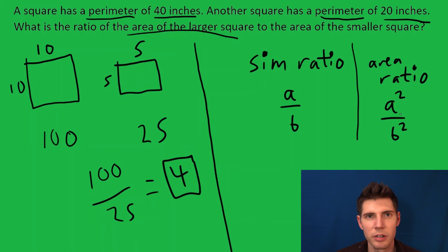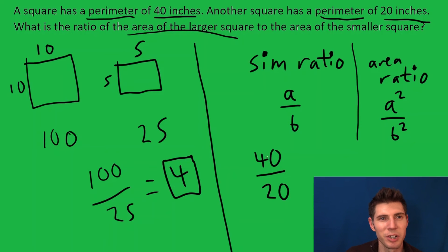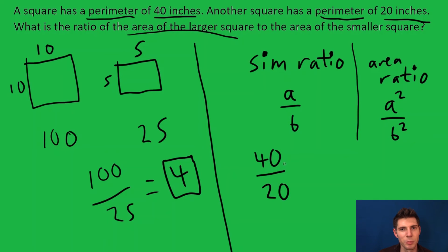So we can literally write 40 over 20, because that's the perimeter of the bigger one over the perimeter of the smaller one. Then we can reduce this—20 goes into both 40 and 20. If we divide top and bottom by 20, we get 2 over 1.